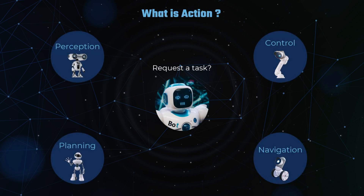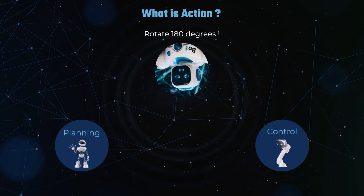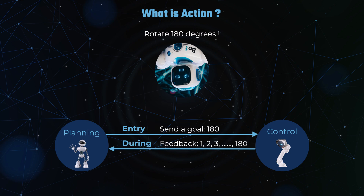In ROS2, an action refers to a long-running remote procedure call that includes feedback and the ability to cancel or preempt the goal. For example, a high-level state machine running in a robot's planning subsystem might call an action to instruct the control subsystem to rotate 180 degrees, which could take several seconds or even minutes to complete. Throughout the process, the control subsystem can provide feedback on the current angle and ultimately send out the result of the action. The planning subsystem has the option to cancel or preempt the rotation to the expected angle.